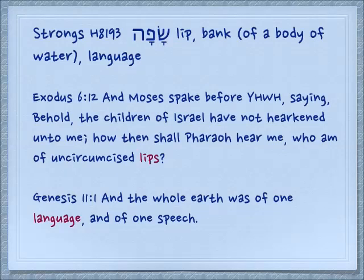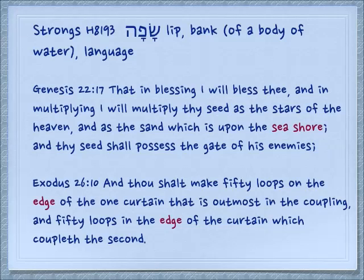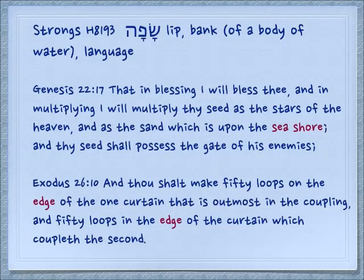Exodus 6:12: 'And Moses spake before Yehovah, saying, Behold, the children of Israel have not hearkened unto me. How then shall Pharaoh hear me, who am of uncircumcised lips?' Genesis 11:1: 'And the whole earth was of one language and of one speech.' Also the seashore — Genesis 22:17: 'That in blessing I will bless thee, and in multiplying I will multiply thy seed as the stars of the heaven, and as the sand which is upon the seashore.' Exodus 26:10, talking about building the Mishkan: 'And thou shalt make fifty loops on the edge of one curtain that is outmost on the coupling, and fifty loops in the edge of the curtain which coupleth the second.' So again we have this idea of a brim or an edge — your lips also are the same.